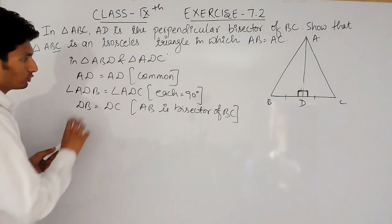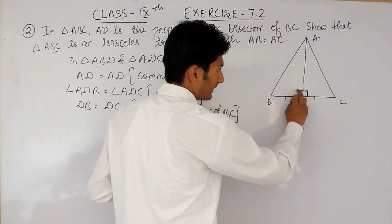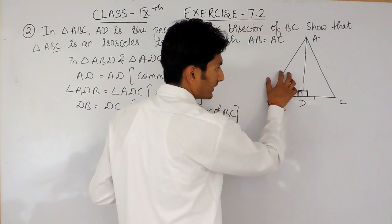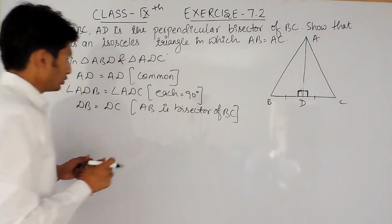So we have proved that one side, one angle, and one side of this triangle are equal to the corresponding part of this.